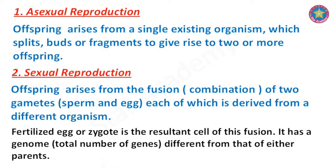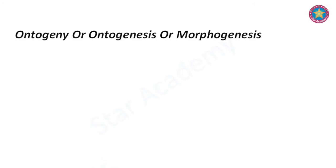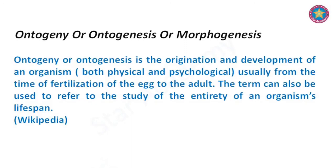The process which transforms a zygote or a somatic cell rudiment into a multicellular and well-organized organism similar to the adult animal of that species constitutes two different aspects of ontogenetic development. According to Wikipedia, ontogeny or ontogenesis is the origination and development of an organism — both physical and psychological — usually from the time of fertilization of the egg to the adult.